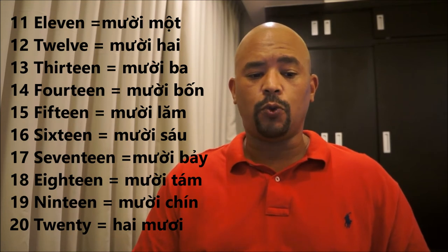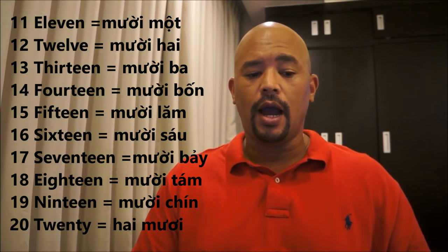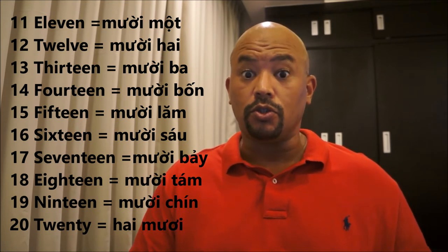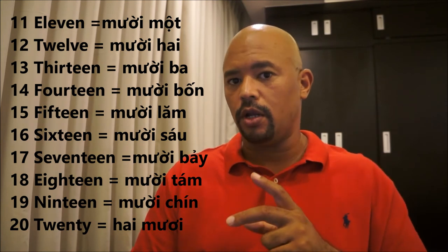And 20 is 'hai mươi.' So 20 looks a little interesting — they put the 2 in front of the 10. So it's like 2, 10 — maybe 2 times 10, which is 20. Or 2 tens, 20.